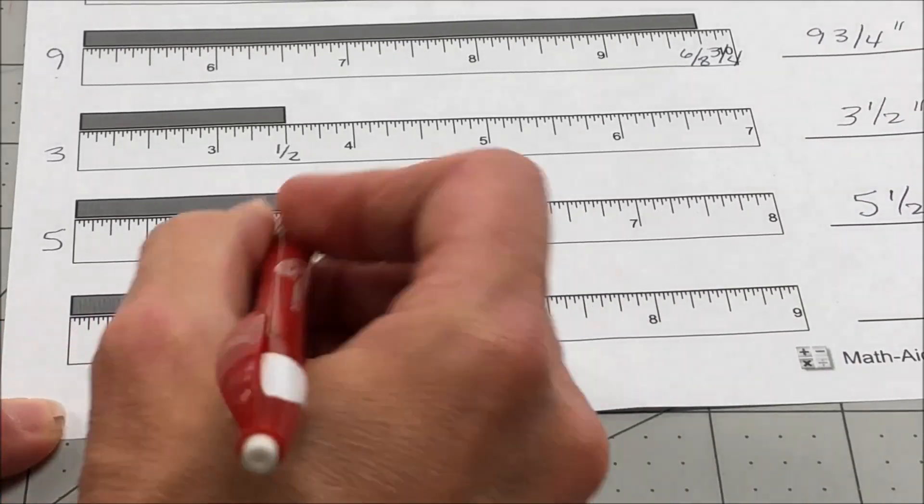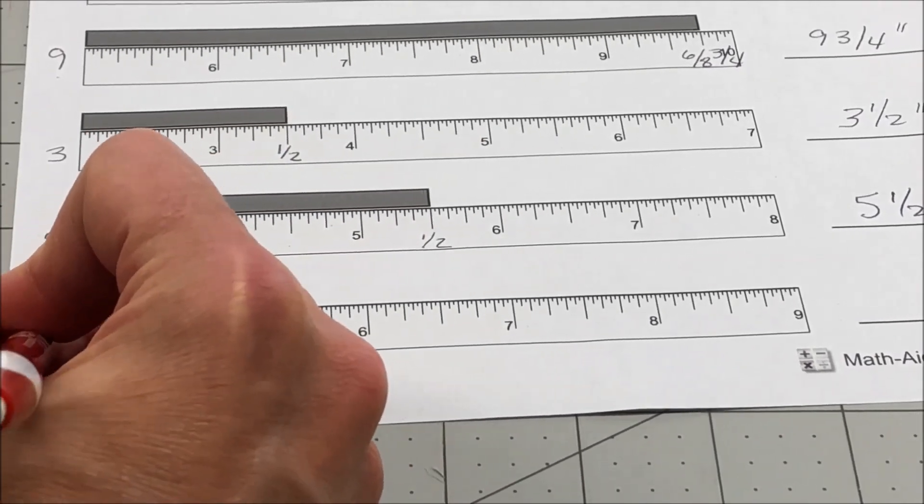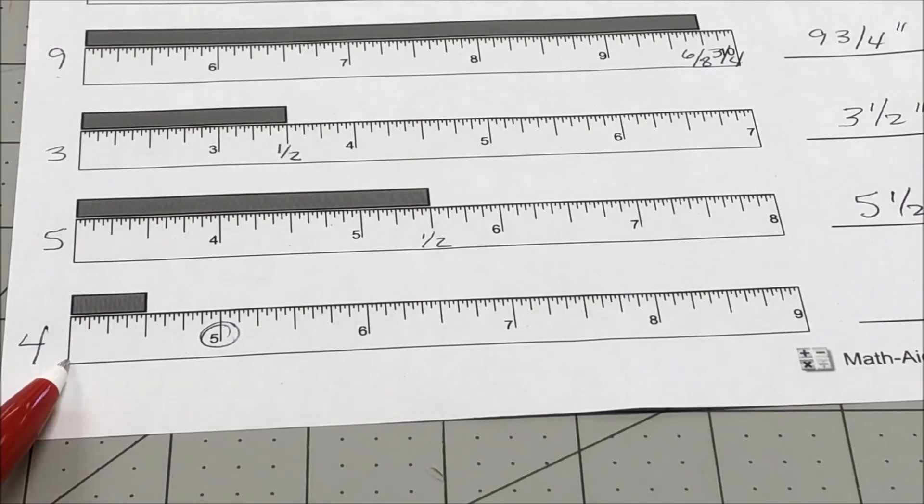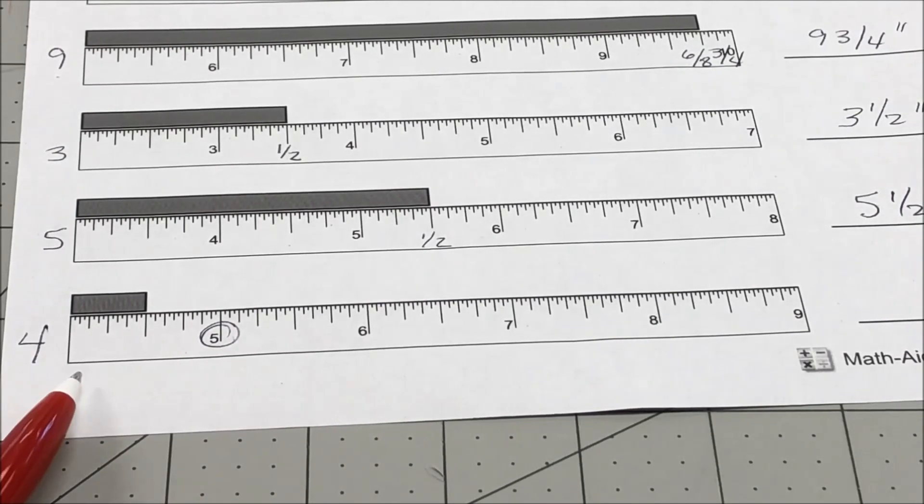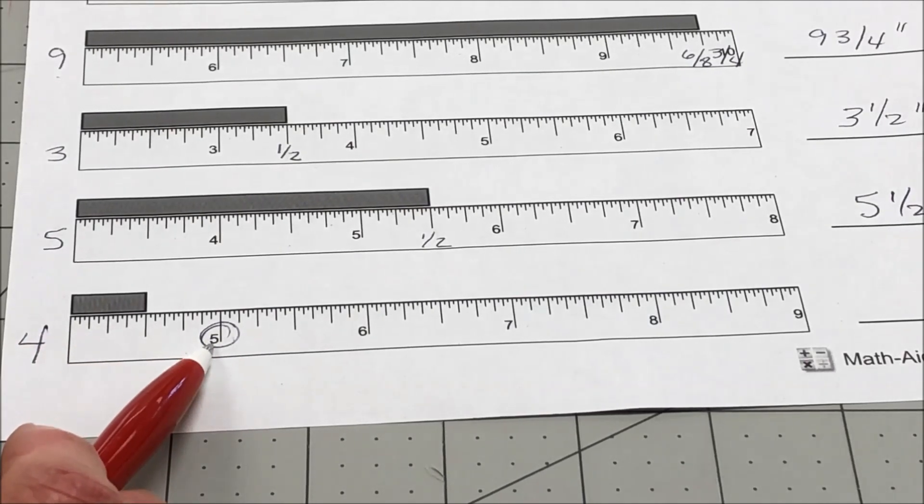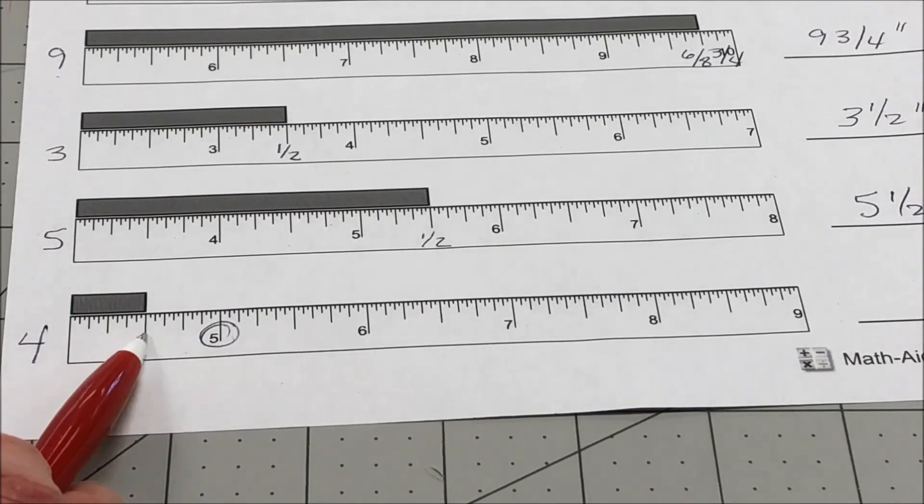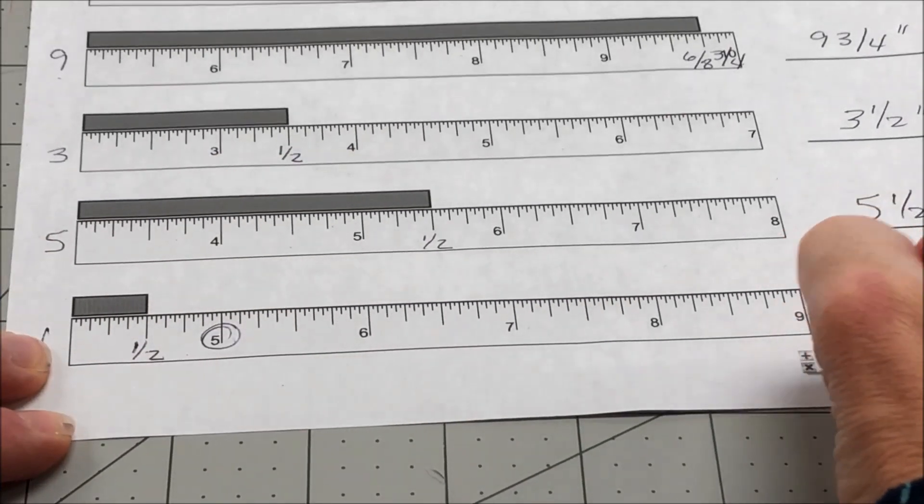And then this one, my number right here is a 5. So this will be a 4. We don't see the 4 here. We don't see a 4 out here. But if this is the 5th inch mark, we know that this is going to be 4 and something because it's not quite to the 5 inch line. So it's 4 and here's an 8th, a quarter, 3/8ths and a half. So that is 4 and a half inches.